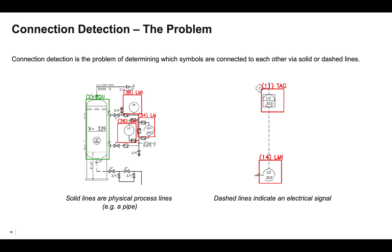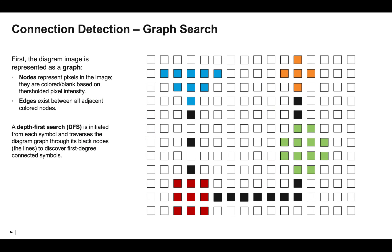The third and final step in our pipeline is connection detection, which is the problem of figuring out which symbols are connected to each other through solid or dashed lines. As a reminder, solid lines are physical process lines, such as pipes, whereas dashed lines represent electrical signals. We have developed a graph search approach for connection detection. First, we represent the diagram image as a graph, where nodes are pixels in the image, and they're colored or blank based on the thresholded pixel intensity. Edges exist between all adjacent colored nodes. Next, a depth-first search is initiated from each symbol in the diagram, and the search traverses through the diagram graph along its lines to discover connected symbols.